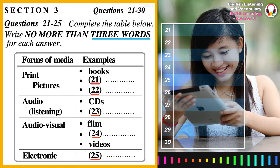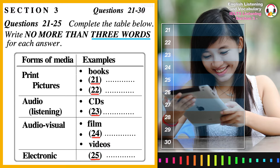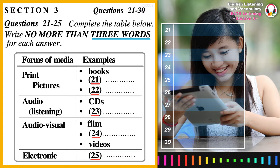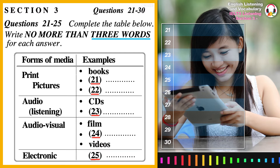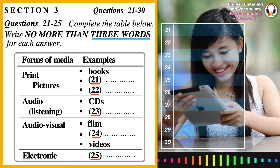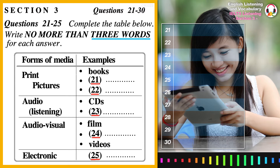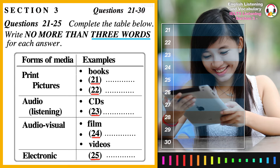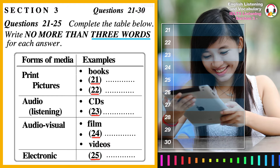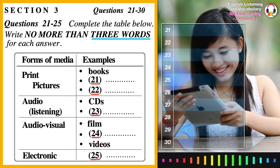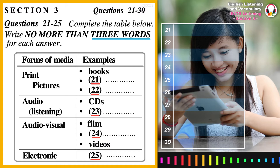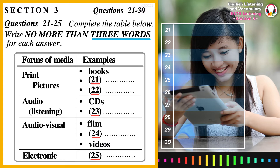That essay we have to write — the one on how children learn through the media — how are you planning to write it? Well, I've given it some thought, and I think that the best way to approach it is to divide the essay into two parts. First of all, we'd have to look at some examples of each type of media, what they are. Then we could describe how we can use each medium so that children can learn something from each one.